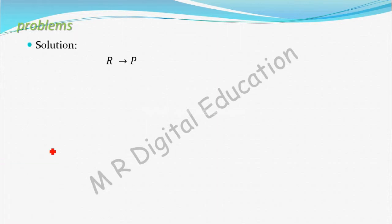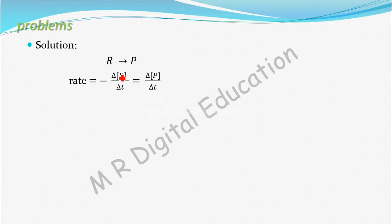We have to calculate the average rate of the reactant. R gives product, so write down the rate equation for this reaction. Rate is equal to change in concentration divided by change in time. Since this is a reactant, we use a minus sign: rate equals minus change in concentration of reactant divided by change in time.